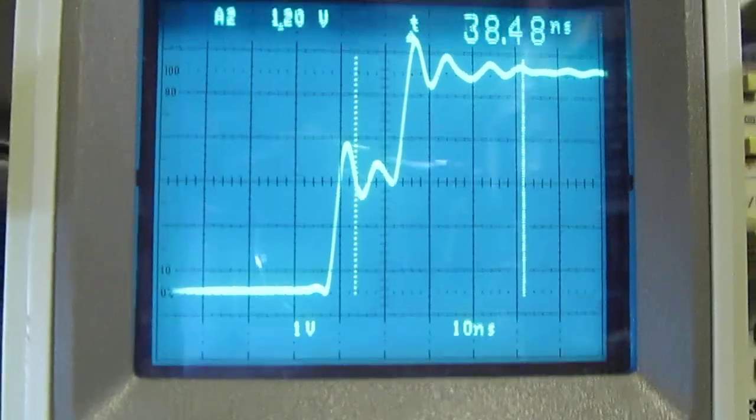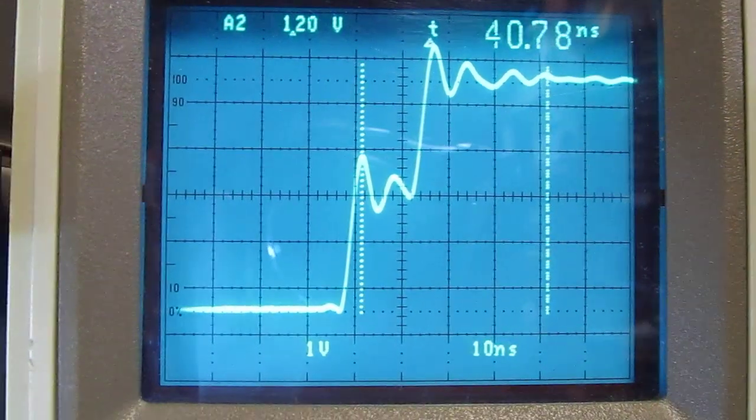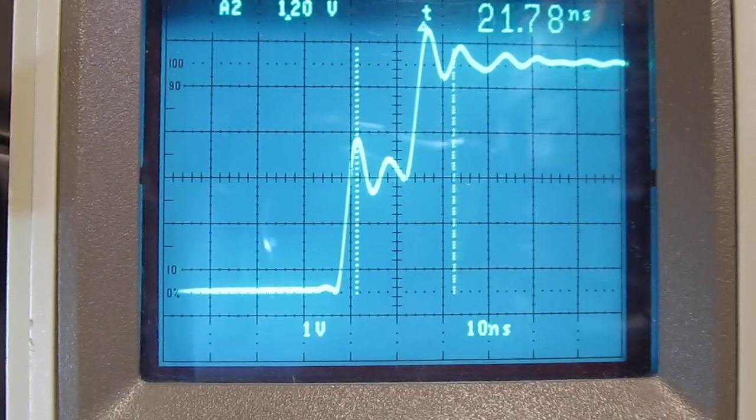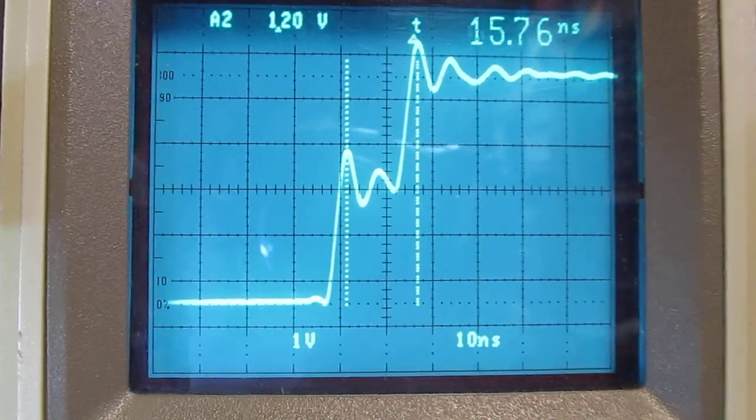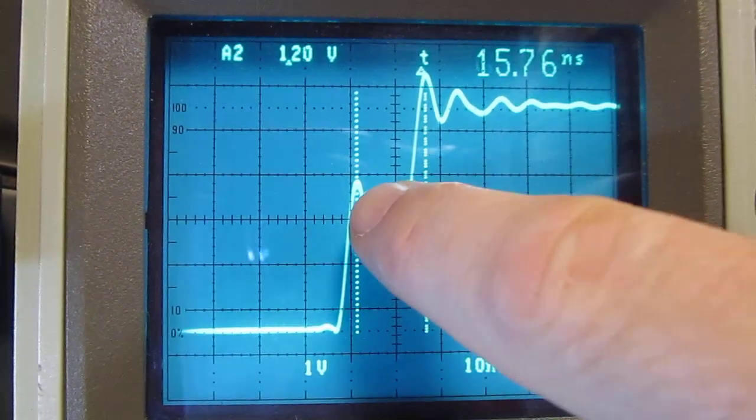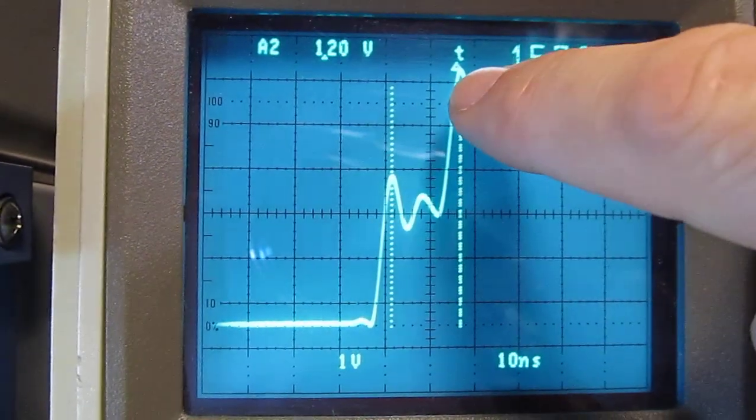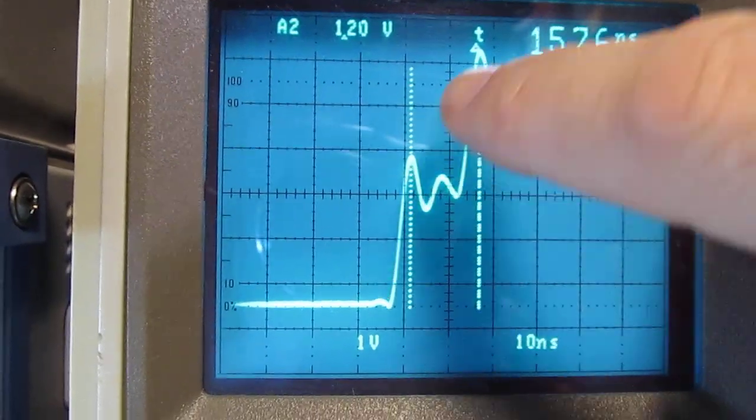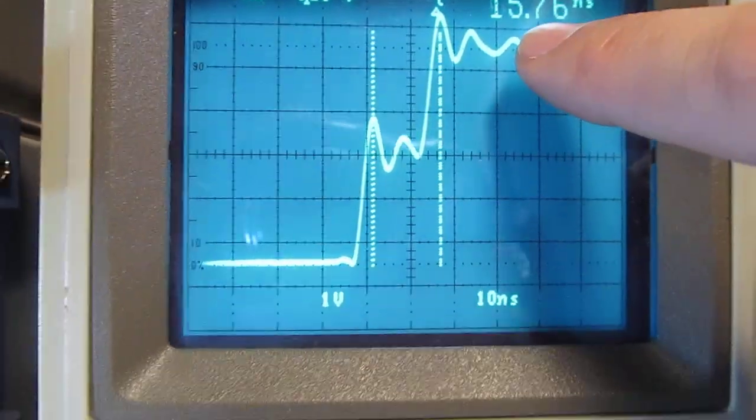Let's move that position over here. I'm going to use cursors on this scope. Let's measure the time delay. That's about fifteen point seven nanoseconds between that overshoot edge and the reflected overshoot edge coming back. We can apply the math to it and calculate the length.